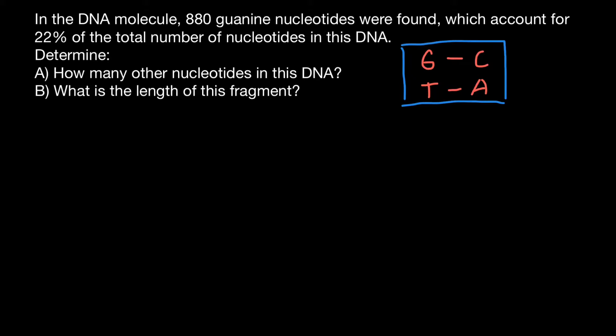If we know that guanine accounts for 880 nucleotides, let's write them down here. This is going to be guanine, and we know that it accounts for 880 nucleotides. And we know that guanine base pairs with cytosine. So that gives us information that we have equal number of cytosines, which would equal to 880 nucleotides.